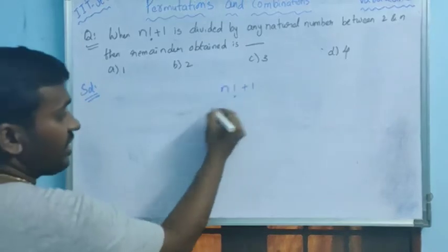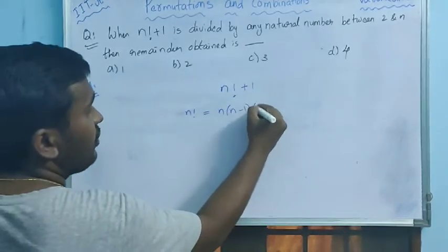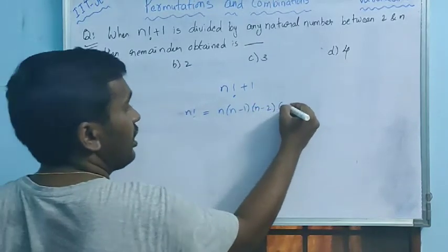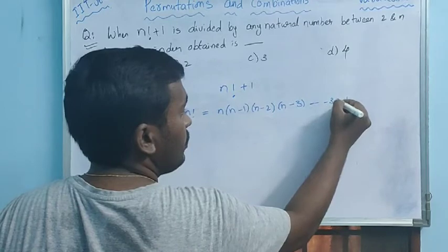See, n factorial, what do you mean by n factorial? n factorial means n into n minus 1 into n minus 2 into n minus 3 and so on up to 1, 3 into 2 into 1.